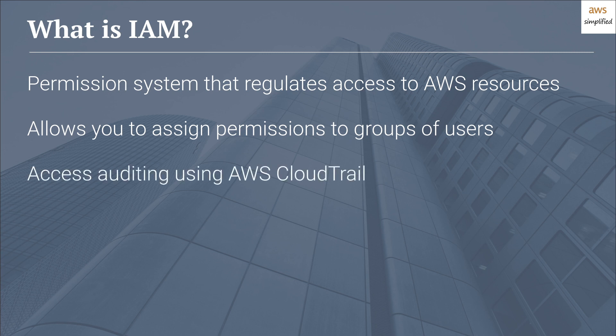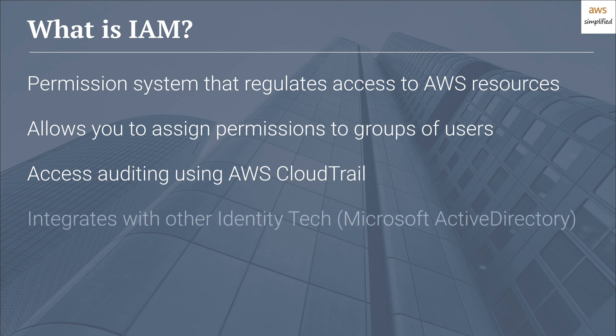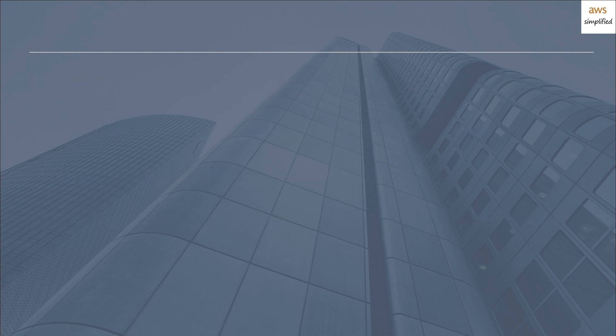IAM provides a mechanism to monitor and audit access to specific resources by enabling AWS CloudTrail. And for those of you in large organizations with existing identity technologies, AWS IAM can easily integrate with them. That's a high-level overview of what IAM is, so let's move on to how it works.